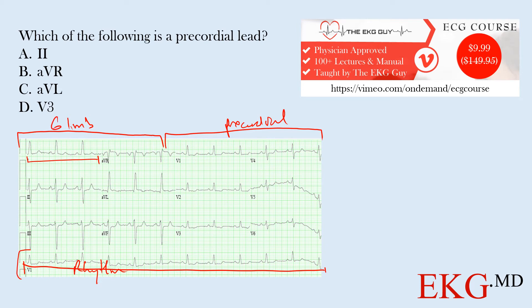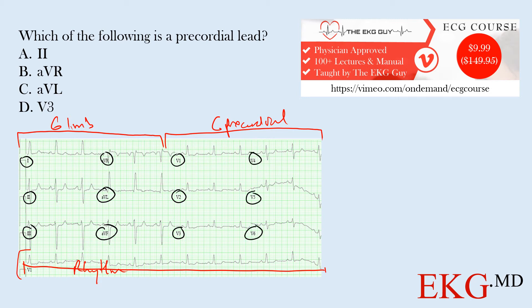We have six limb leads and six precordial leads. The six limb leads are lead one, lead two, lead three, AVR, AVL, and AVF. Then we have the six precordial leads: V1, V2, V3, V4, V5, and V6. So our precordial chest leads are V1 through V6.